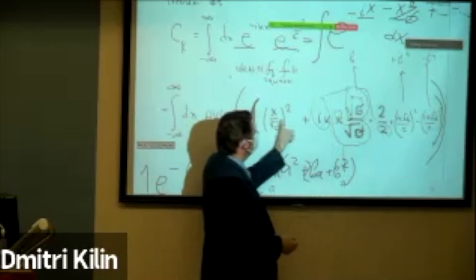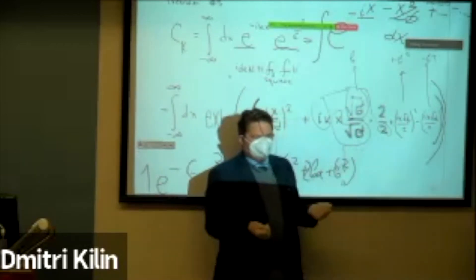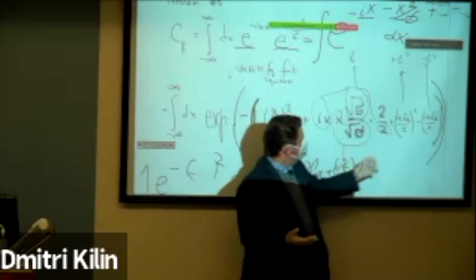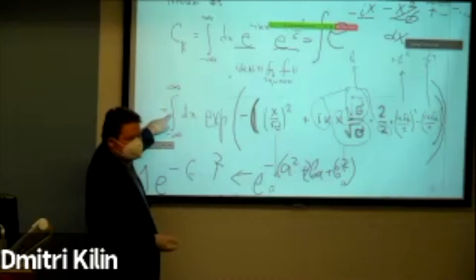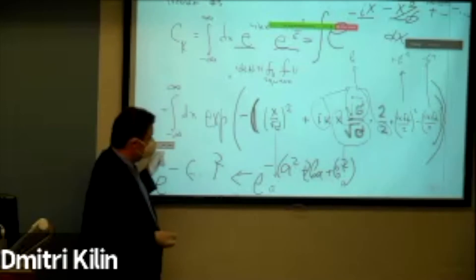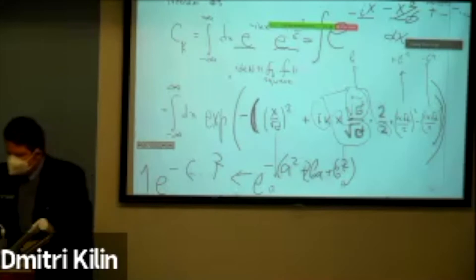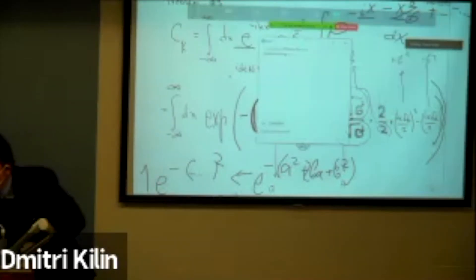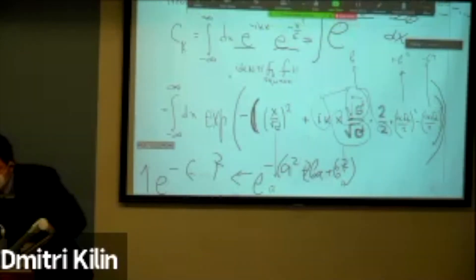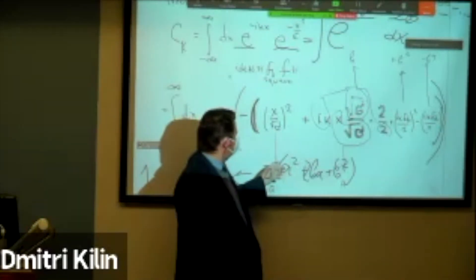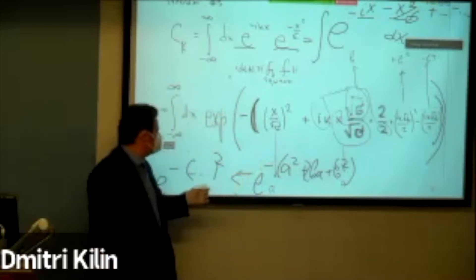I either have two or four terms, but the last term does not depend on the integration variable, so I can move it out in front of the integral. After identifying the full square, I have only an (a plus b) squared and the free term goes out front.